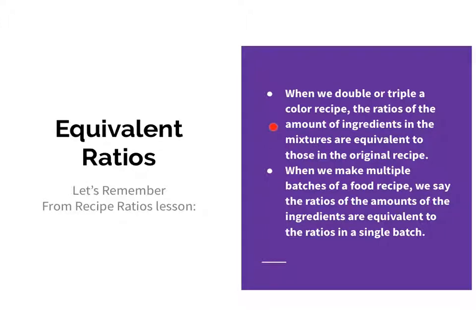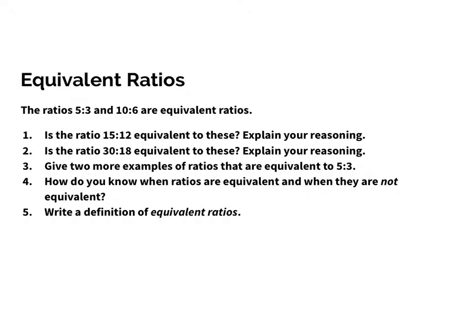When we were talking about making the powdered drink, when we change the ratio, if we kept the ratio equivalent then the taste of the drink should be just like the original ratio or the original recipe. When we make multiple batches of food, we say the ratios of the amounts of the ingredients are equivalent to the ratios in a single batch. These are the questions that go with just some basic equivalent ratios, one through five, and they're on your student worksheet as well.